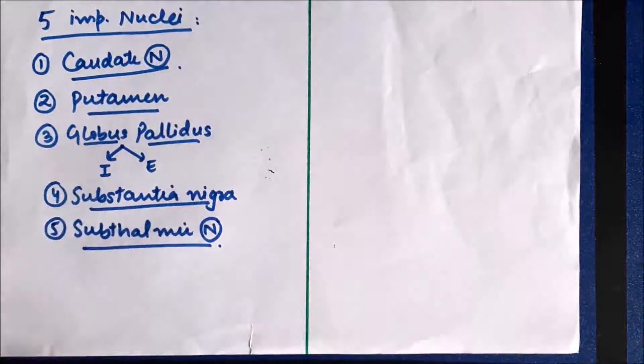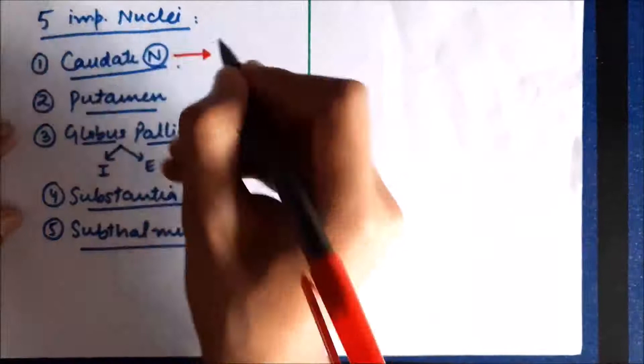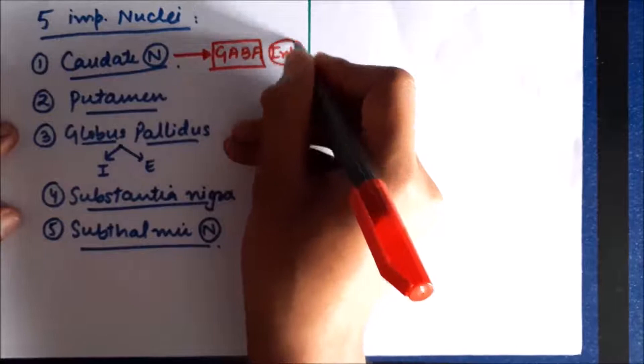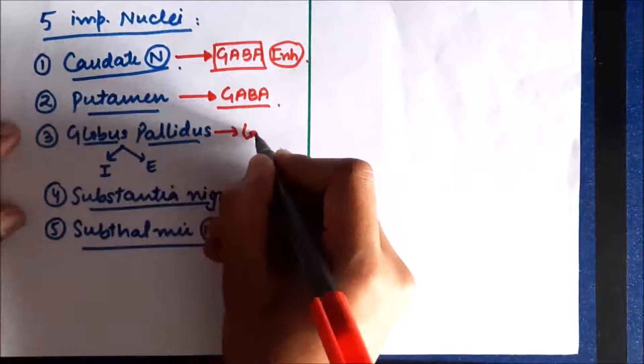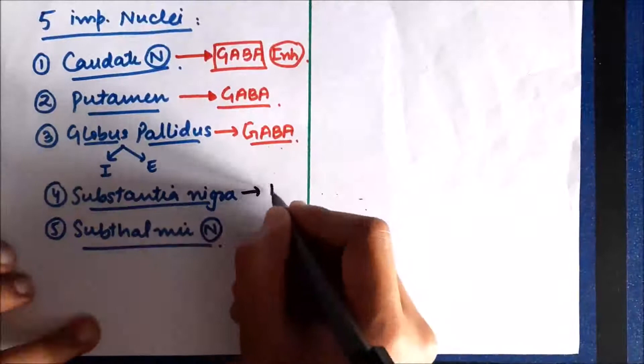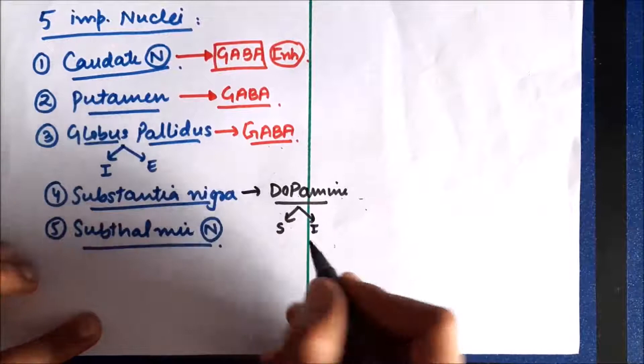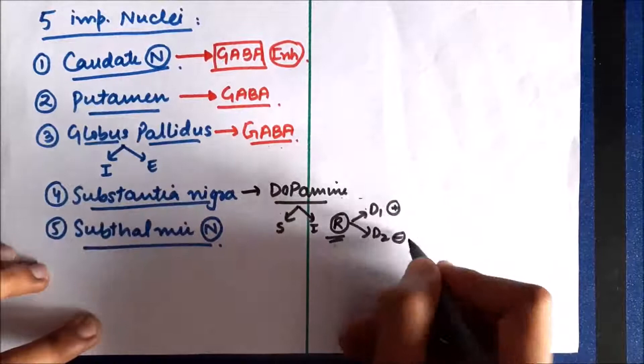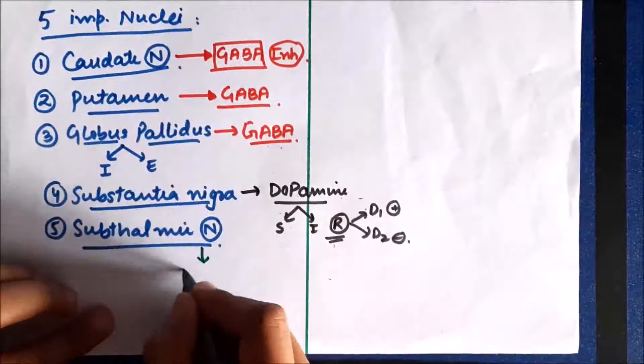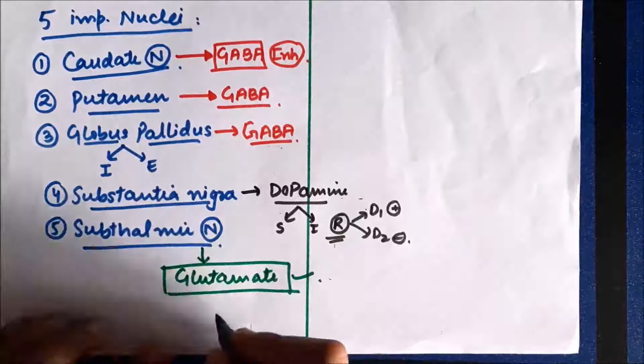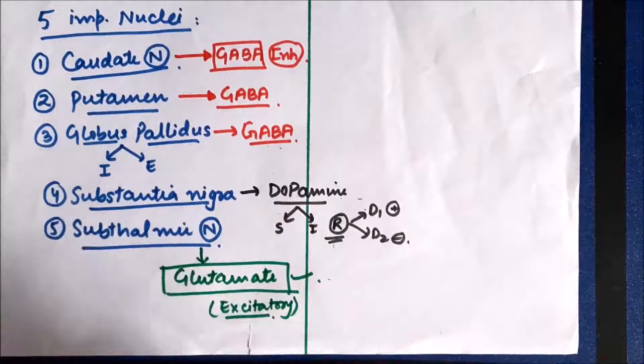The main neurotransmitter in the caudate nucleus is GABA, which is an inhibitory neurotransmitter. The main neurotransmitter in the putamen is also GABA, and in the globus pallidus it is again GABA — so these are all inhibitory nuclei. Substantia nigra secretes dopamine, which can perform both stimulatory and inhibitory functions depending on the receptors: stimulatory on D1 receptors and inhibitory on D2 receptors. The subthalamic nucleus uses glutamate, an excitatory neurotransmitter — it is the excitatory part of basal ganglia.